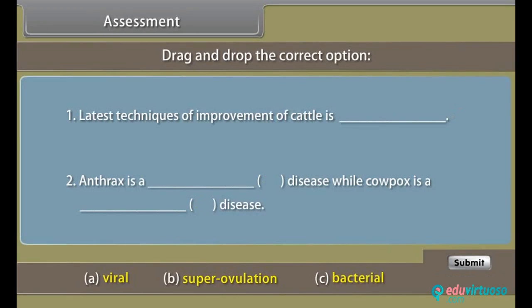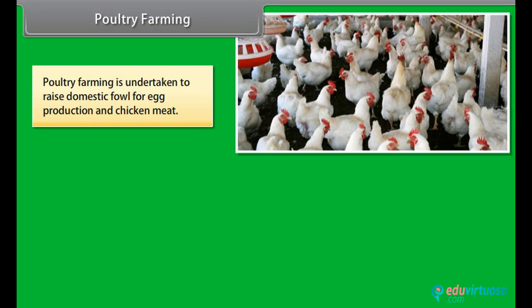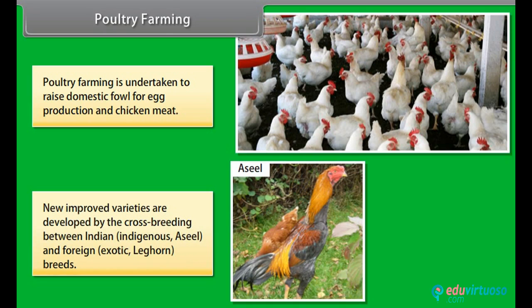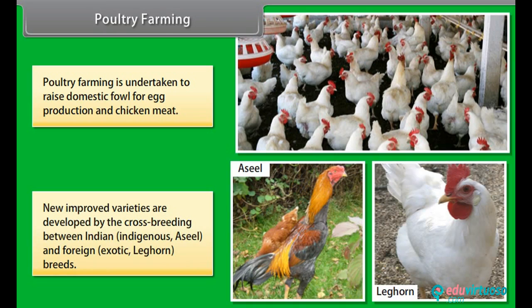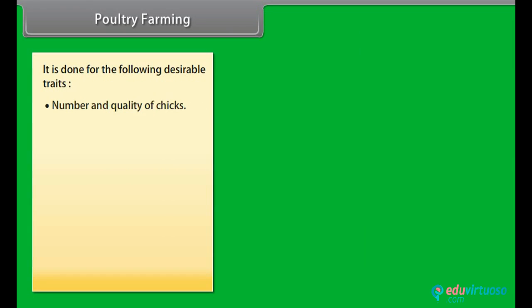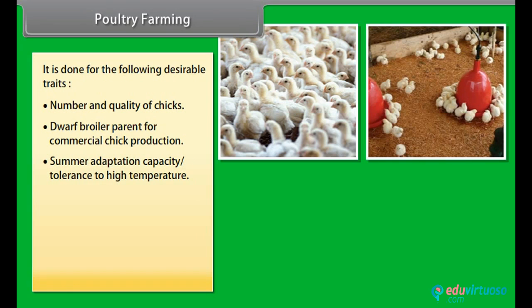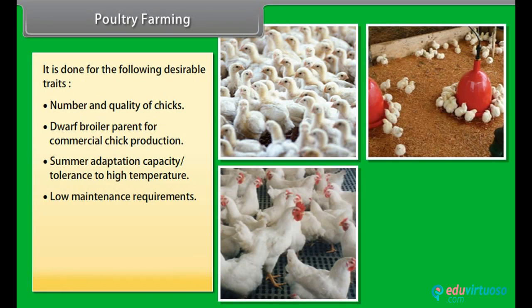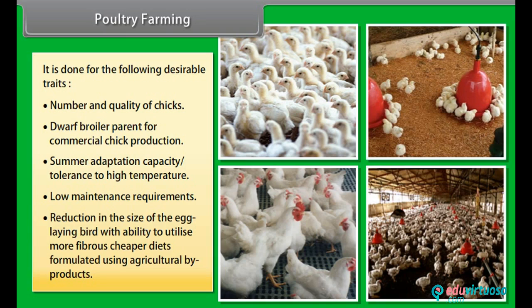Poultry farming is undertaken to raise domestic fowl for egg production and chicken meat. New improved varieties are developed by cross-breeding between Indian indigenous Aseel and foreign exotic Leghorn breeds. This is done for desirable traits such as number and quality of chicks, dwarf broiler parent for commercial chick production, summer adaptation capacity, tolerance to high temperature, low maintenance requirements, and reduction in the size of the egg-laying bird with ability to utilize more fibrous, cheaper diets formulated using agricultural by-products.